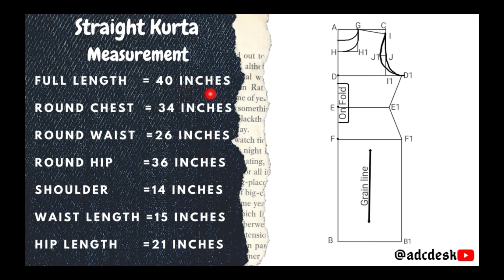Full length 40 inches, round chest 34 inches, round waist 26 inches, round hip 36 inches, shoulder 14 inches, waist length 15 inches, hip length 21 inches.